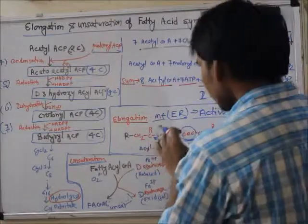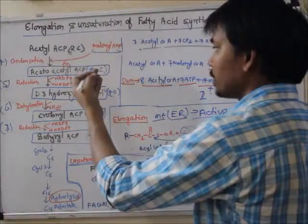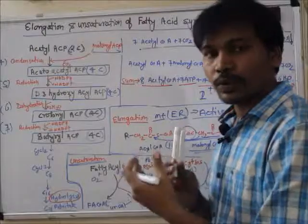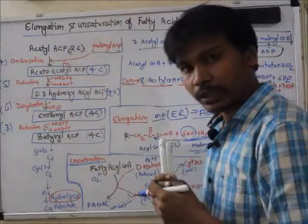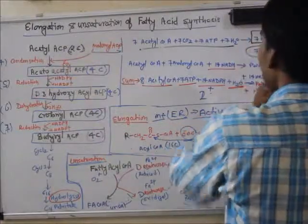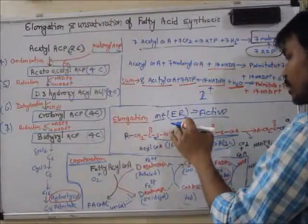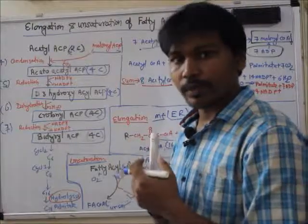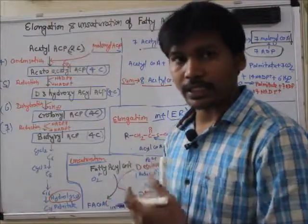Fatty acid synthesis takes place in the cytosol, combined with elongation in the mitochondria and endoplasmic reticulum. Acetyl-CoA is formed within the mitochondria and transported out, then participates in malonyl-CoA formation and other cytosolic processes. In the next lecture, I will describe oxidation of fatty acids — including elongation, unsaturation, and where oxidation takes place. Thank you.